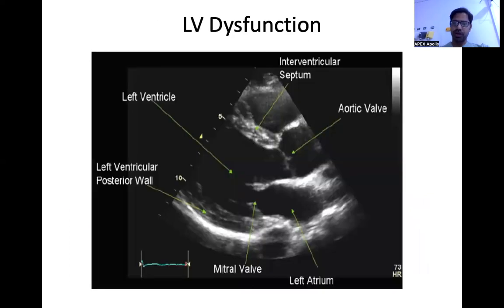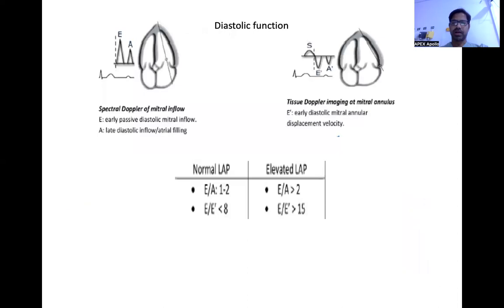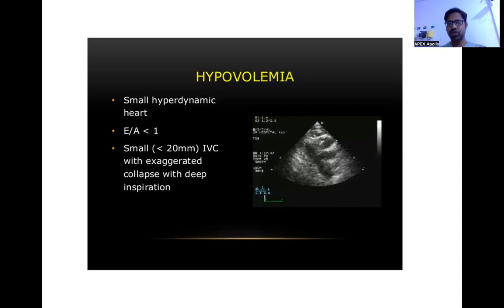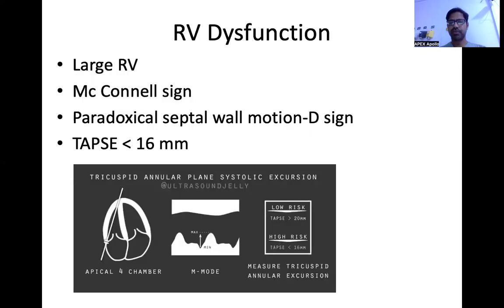If the left ventricle is distended, that means there is LV dysfunction — you can see an enlarged LV. Regarding hypovolemia: in a hypovolemic patient the heart will appear hyperdynamic. The myocardium will appear to be 'kissing' — at end-diastole the walls of the ventricle will be touching each other. That is the picture of hypovolemia. If your patient is in shock and the echo shows this picture, you can comfortably give fluids.